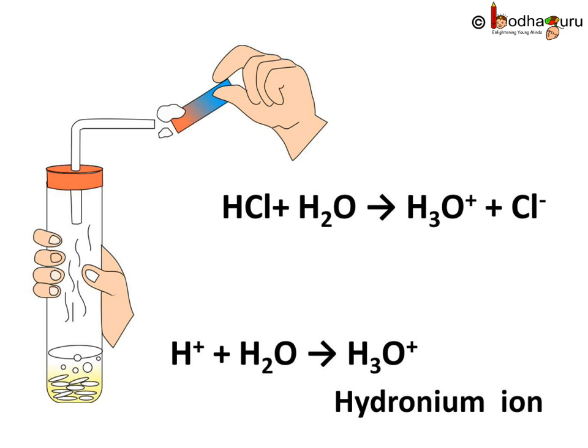H₃O⁺ is the hydronium ion. pH is actually the measurement of hydrogen or hydronium ion concentration, and higher concentration means lower pH, which means acidic — which turns blue litmus red.